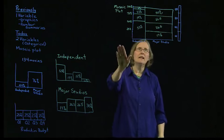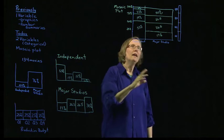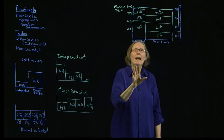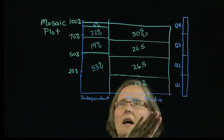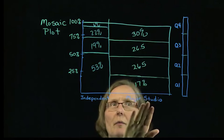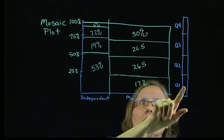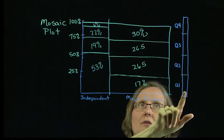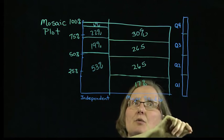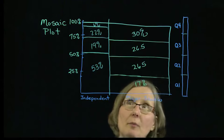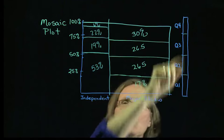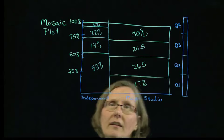This is an example of a mosaic plot. Note, if the production budget was unrelated to the independent or major studio, we'd expect the bars over each to look like this marginal distribution at the right. Each one would have about 25% of their movies in each quartile. Note, though, our mosaic plot shows that's not the case.